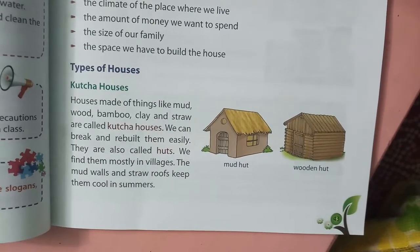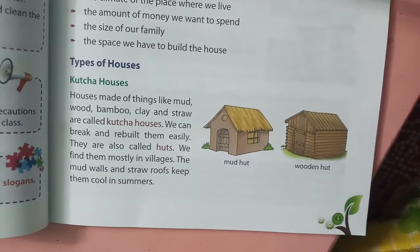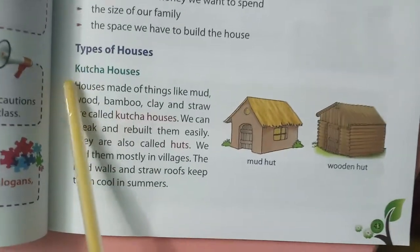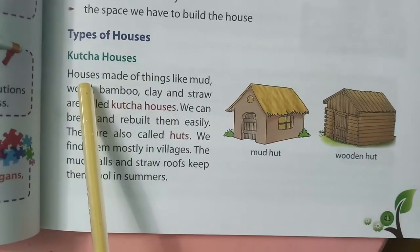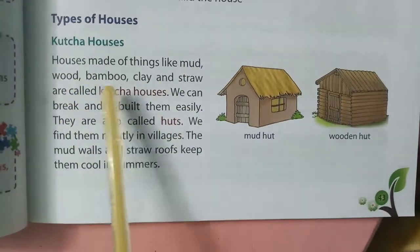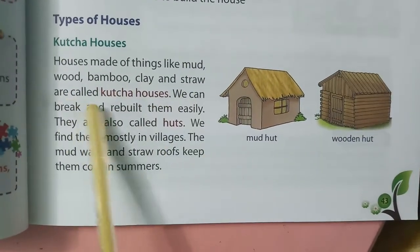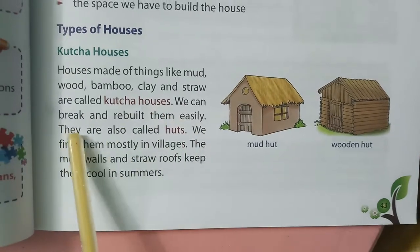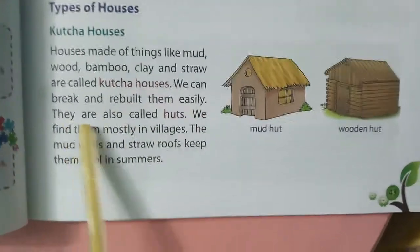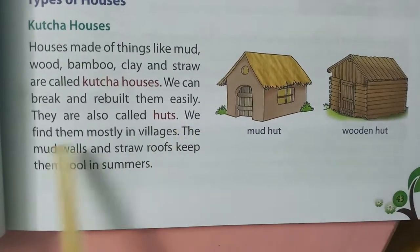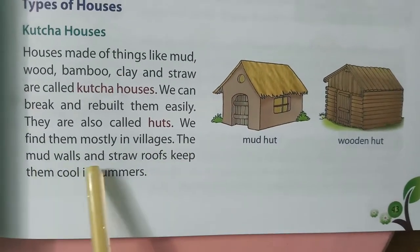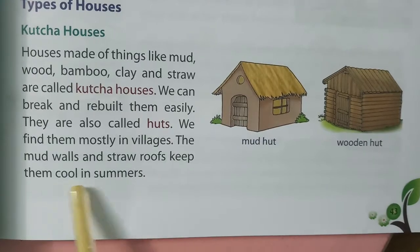According to the space we have, we build our houses. Types of houses: Kaccha houses — houses made of things like mud, wood, bamboo, clay, and straw are called kaccha houses. We can break and rebuild them easily. They are also called huts. We find them mostly in villages. The mud walls and straw roofs keep them cool in summers.